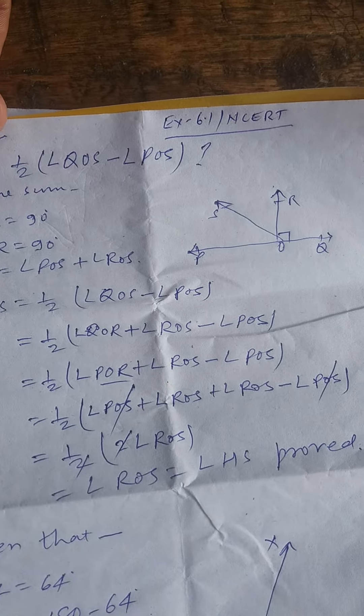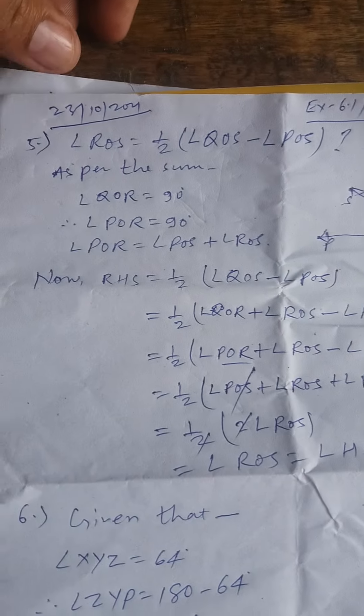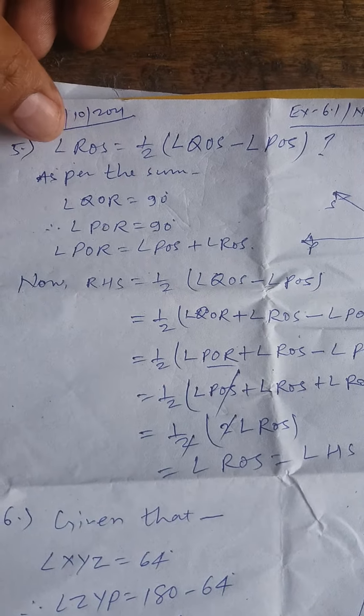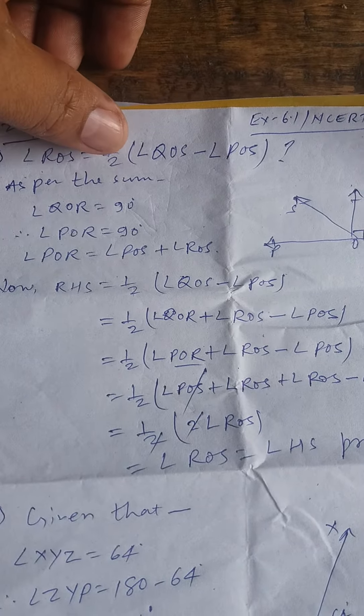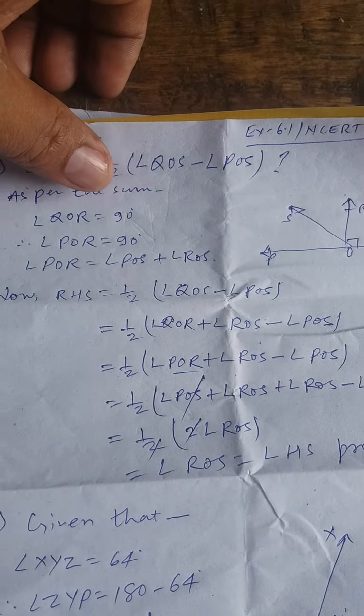Here you can see, this is exercise 6.1, CRT class 9, question number 5. Angle ROS equals 1/2 times (angle QOR minus angle QOS). We have to prove it.